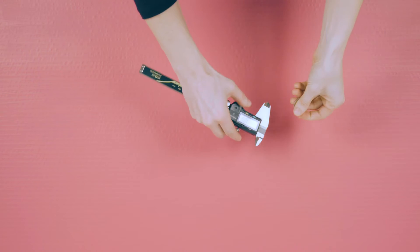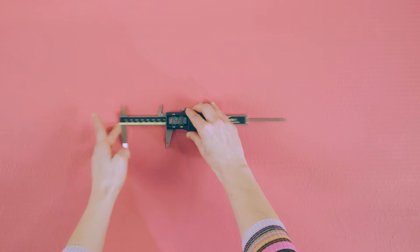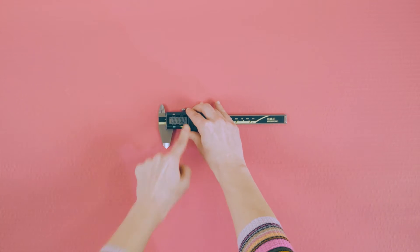Calipers are especially good for measuring thickness. Calipers have many features to help you get the most precise measurements you can. Before you start using your calipers, you should close the jaws and press zero.